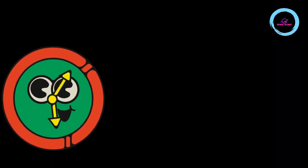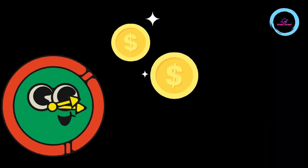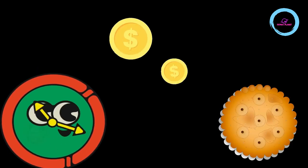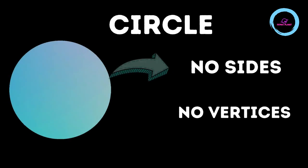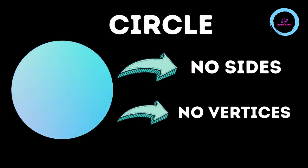This is a clock. These are coins. And this is a cookie. So what's common in all these? They are all circles. A circle has no sides and no vortices.